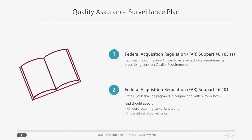FAR Subpart 46.401 suggests the QASP be prepared in conjunction with the preparation of the Statement of Work, or, in your case, the Performance Work Statement, or PWS. Your plan should specify all work requiring surveillance and the method of surveillance. Additionally, DFARS 246.401 states the requirement for a quality assurance surveillance plan shall be addressed and documented in the contract file for each contract except for those awarded using simplified acquisition.